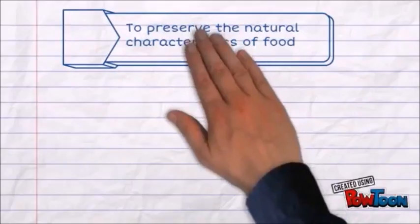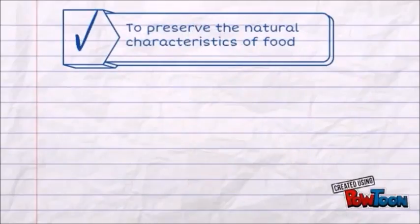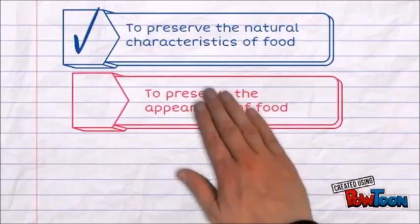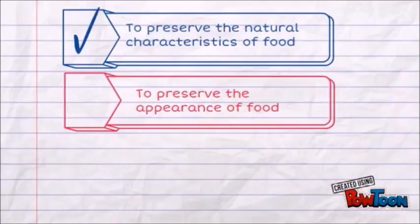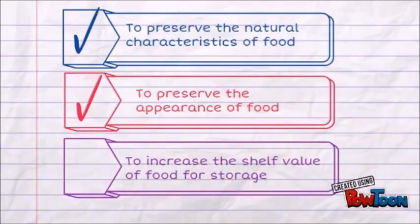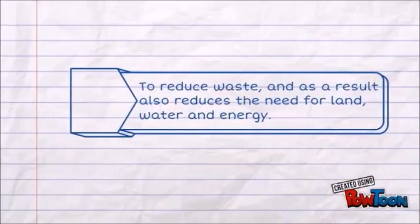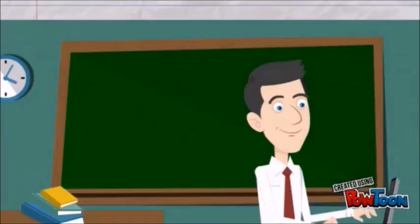First, to preserve the natural characteristics of foods. Second, to preserve the appearance of food. Third, to increase the shelf life of food for storage — which is to ensure the processed food remains in good condition throughout its journey from the factory to the shop and to the consumer at home. Finally, to reduce waste and, as a result, also reduce the need for land, water, and energy.